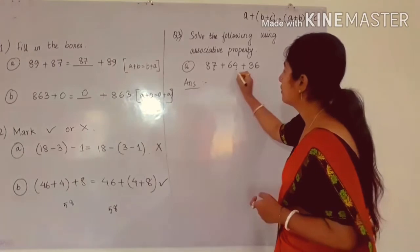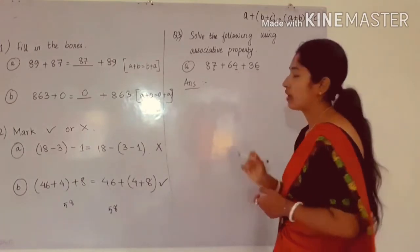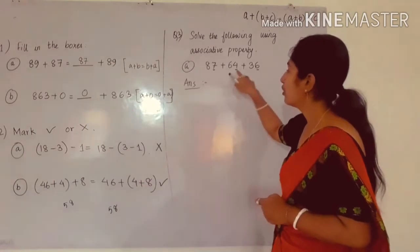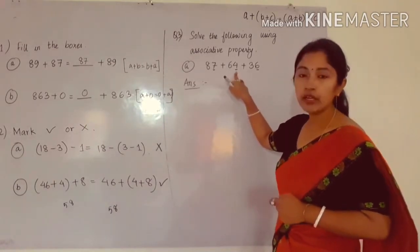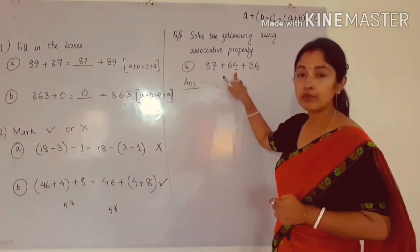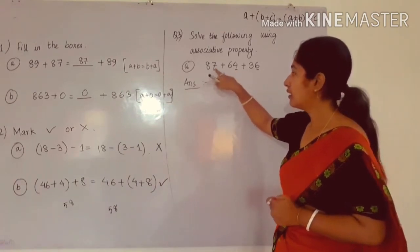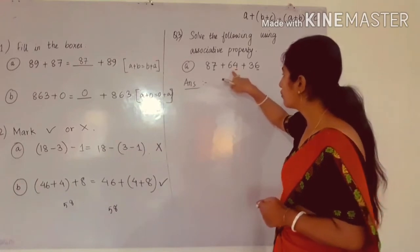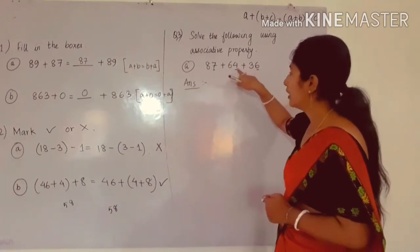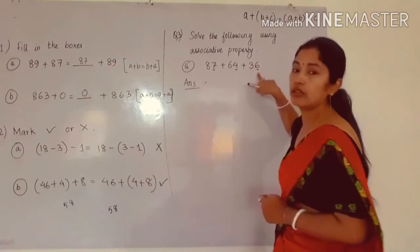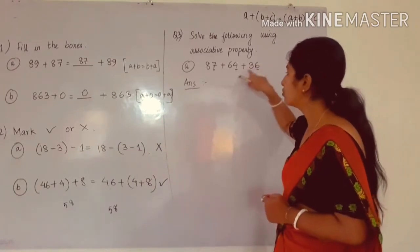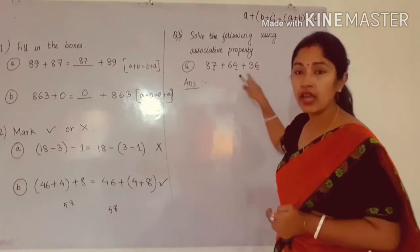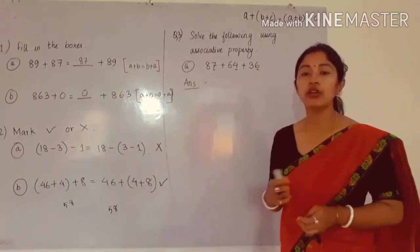The ones place digits present are 7, 4, and 6. When we add 7 and 4, we will get 11, and in 11 we have 1 in the ones place. So we will not add 87 and 64. Instead, check 64 and 36: ones place is 4 and ones place is 6. We will add these two terms because when we add 4 and 6, we will get 10, and in 10 we have 0.